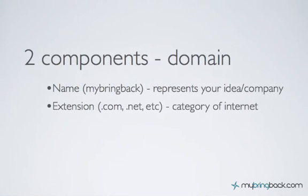There are two parts to the domain. You've got the name — for example, 'mybringback' is the name — and then you've got the extension, which is the .com, the .net, the .edu, the .co. The most popular extension is .com for the commercial industry. Don't be afraid to get a .co for something specialized, or a .org if you're looking for a non-profit organization. Each extension is a little bit different — you can't have a .edu if you're not an education facility, so keep that in mind.